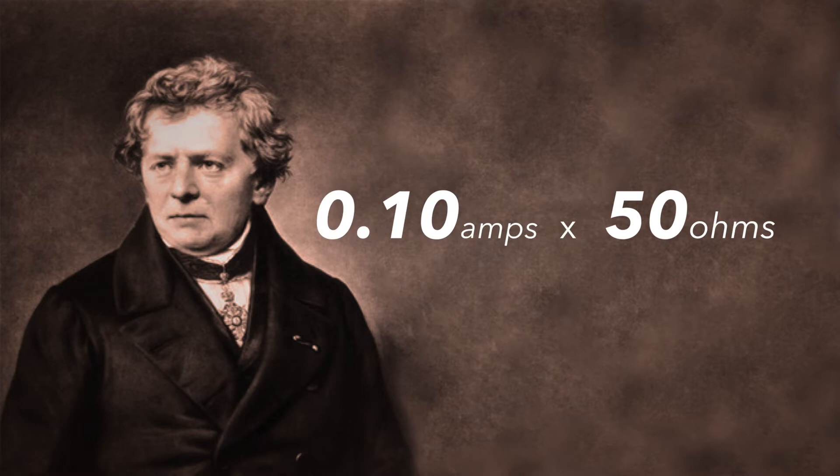So, if we wanted to reduce the current to 0.10A and use the same 50 ohm resistor, we would end up with 5V. Well, that's enough with the math. Let's get back to the build.